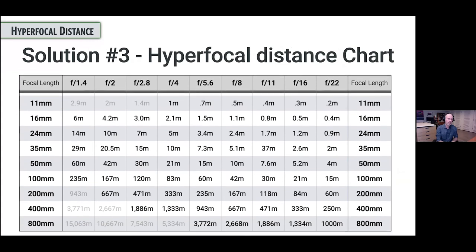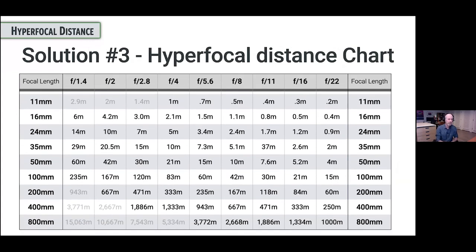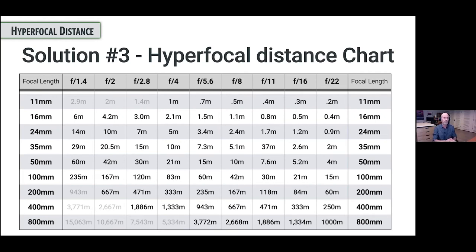A third way of figuring out the hyperfocal distance is to use a hyperfocal chart — there are a lot of these you can look up online. These numbers are from 100 years ago so they may not be as accurate as you'd like. For instance, a 24mm lens at f16: you would focus at 1.2 meters to get that hyperfocal distance. And you might say, well, we're going to stop down to f22 just to make sure we're really covering ourselves and getting a lot in focus. Some of you are thinking about diffraction — that is a topic for another time. If you wanted more depth of field, you could just stop down to the next number.